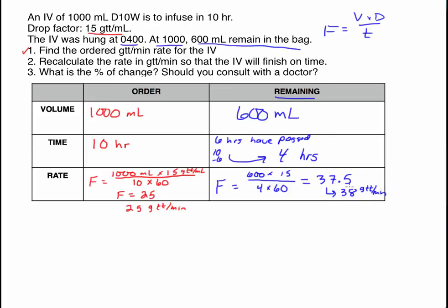Just as in the previous problem, we had to be careful about figuring out what remains. 600 remains because we were told that. With the time, that was a bit more complicated — we had to think about how much time had passed and how much remained. So we answered part one: we figured out the ordered rate and then recalculated to determine how much was needed to finish on time.